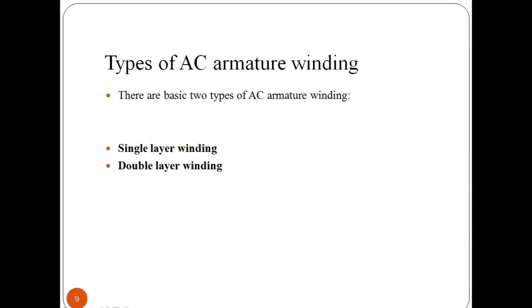What are the types of AC armature winding? They are basically of two types. One is single layer winding and another is double layer winding.